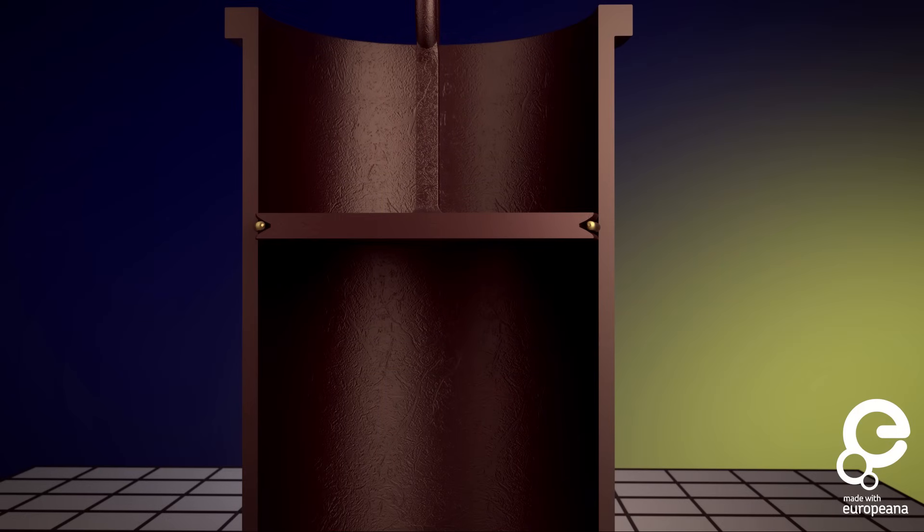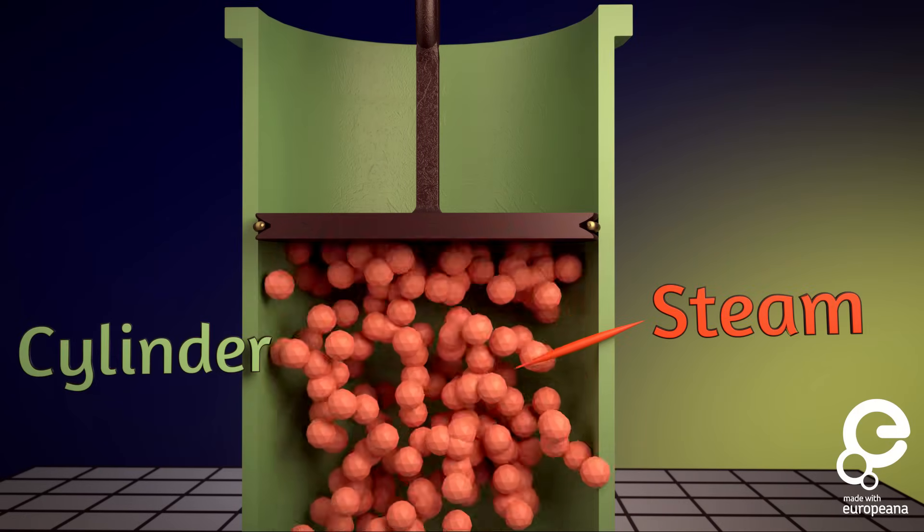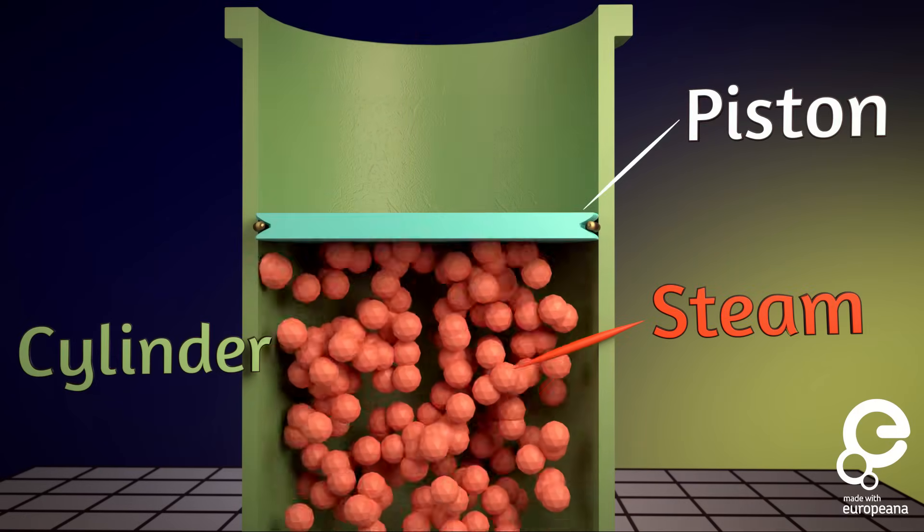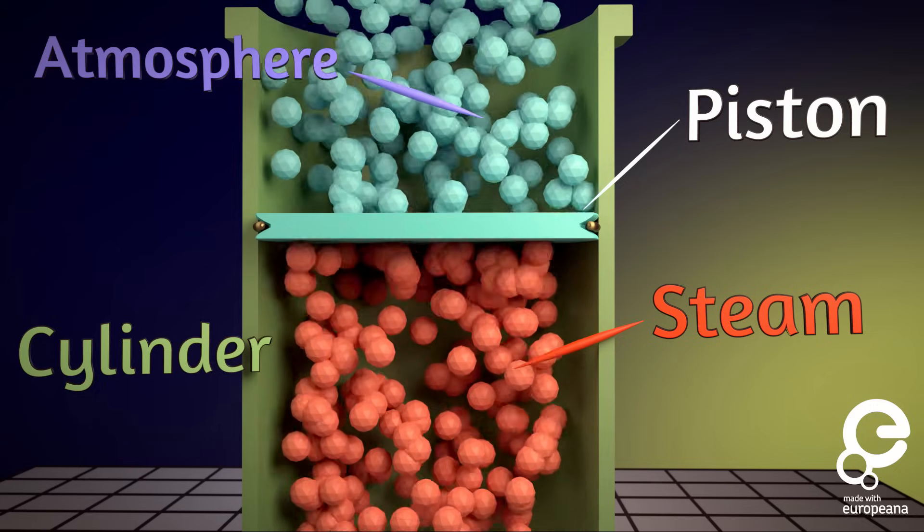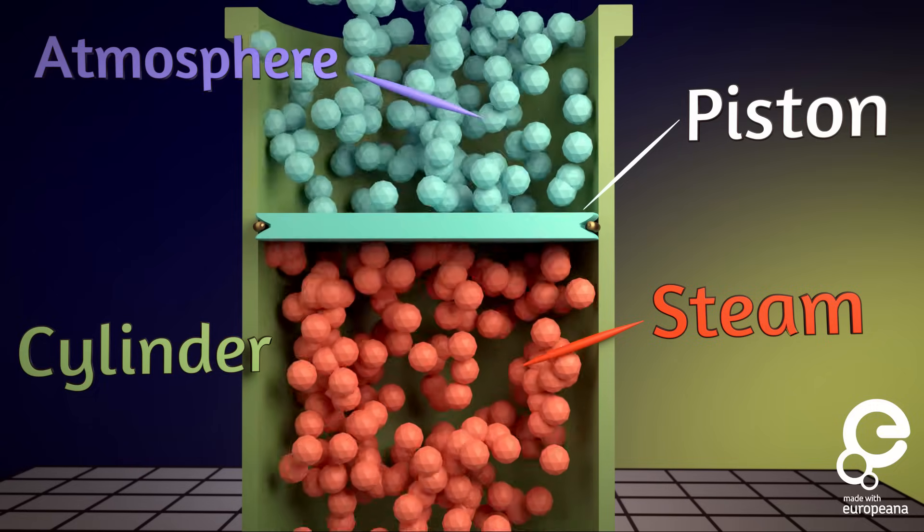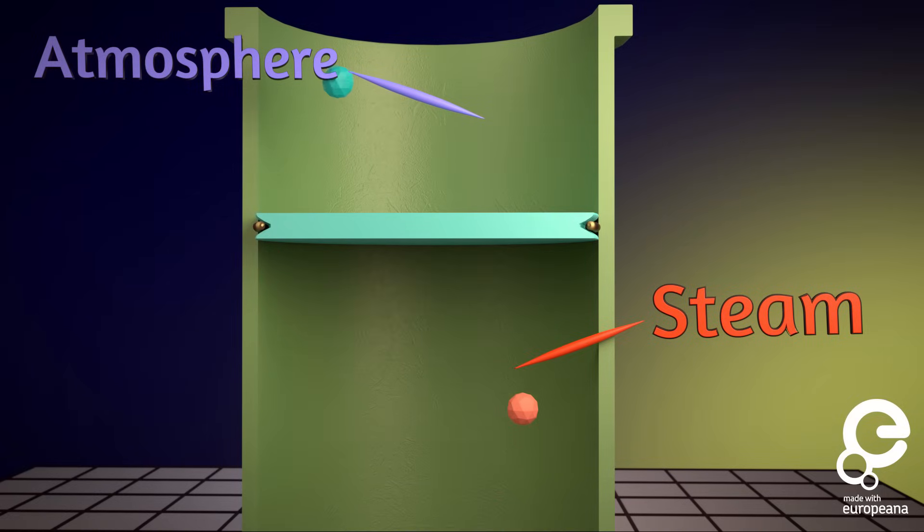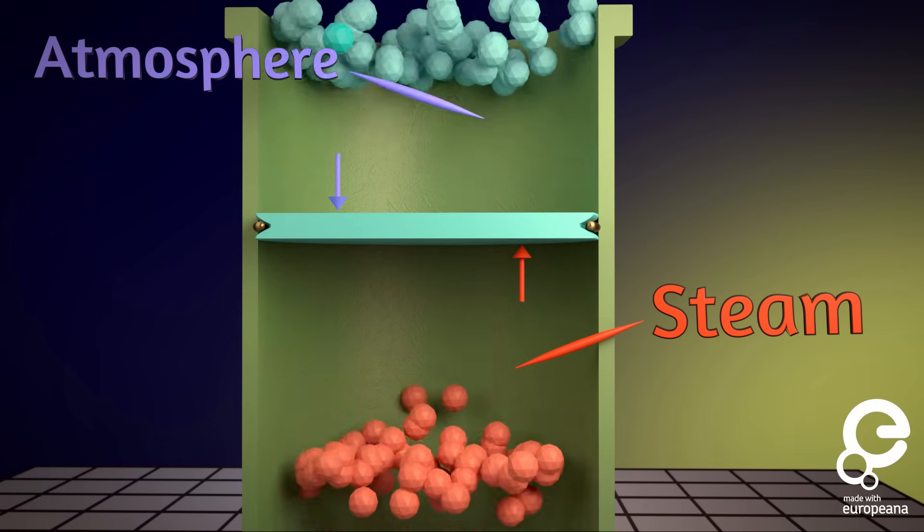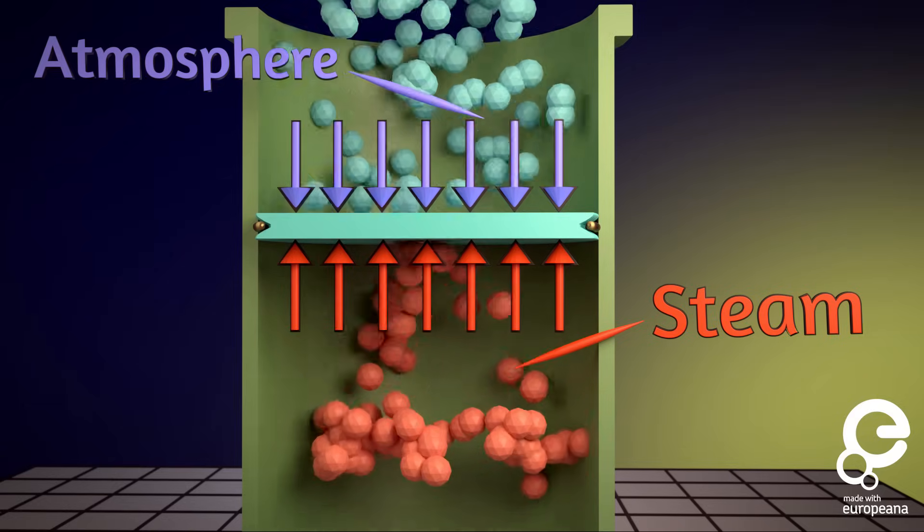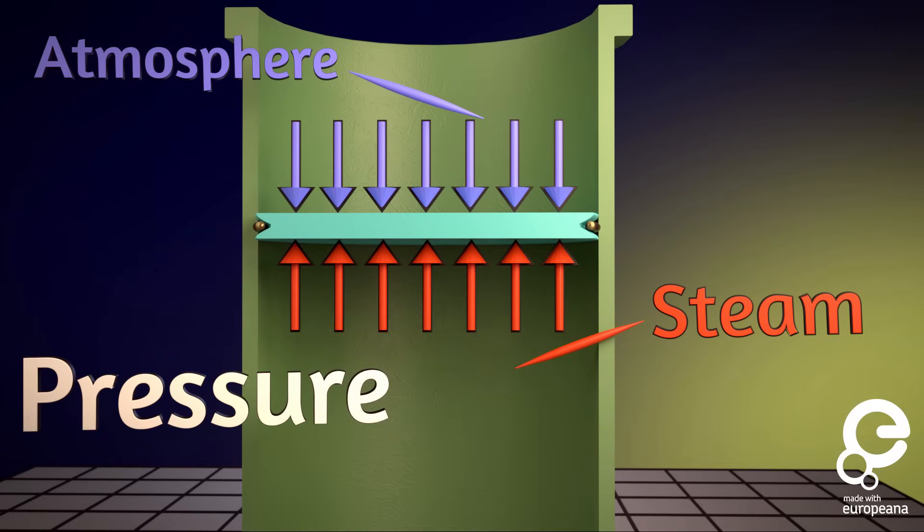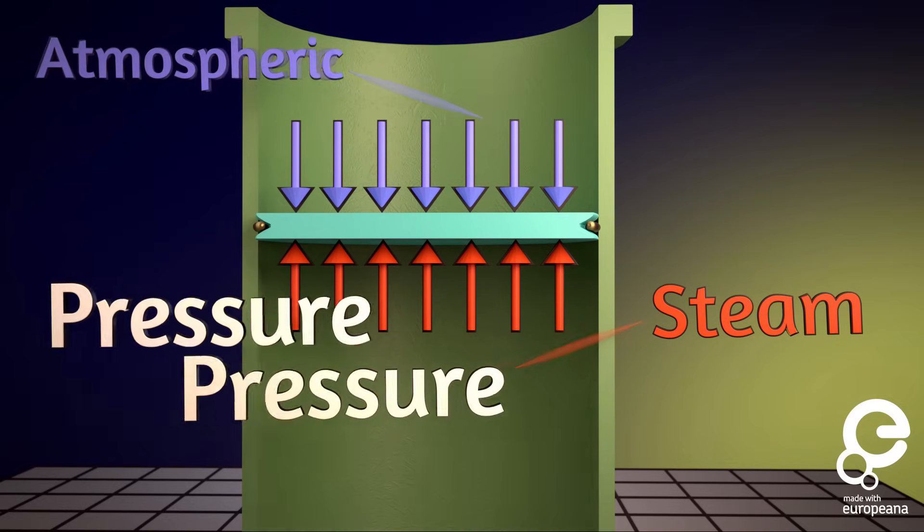At the bottom we have the cylinder of steam, in the middle is the piston, and above that is the air in the atmosphere. Both the steam and air particles are bouncing around, and every time a molecule bounces on the piston, it imparts a little bit of force. The force of the air particles bouncing over the area of the piston is called pressure, and because the atmosphere is imparting a force over that area, we call it atmospheric pressure.